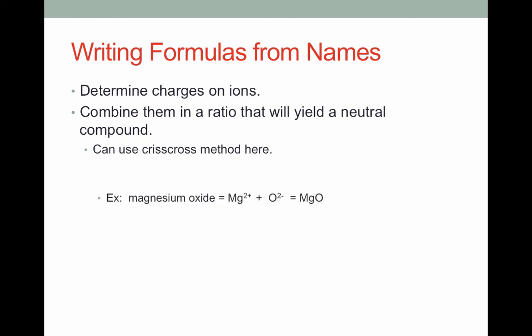So for instance, if I'm given the name magnesium oxide, I know that magnesium, because it's in group 2 of the periodic table, will always have a 2 positive charge, and oxygen, because it's in group 16 of the periodic table, will always have a 2 minus charge. Put them together and we get MgO. Our 2 plus and our 2 minus cancel out.